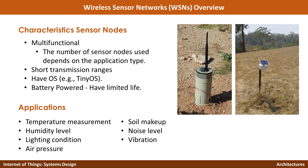Common applications of wireless sensor networks include temperature measurements, humidity, lighting, air pressure, soil makeup, noise level, and vibration. Wireless sensor networks have been used in agriculture, farming, and air quality monitoring applications.